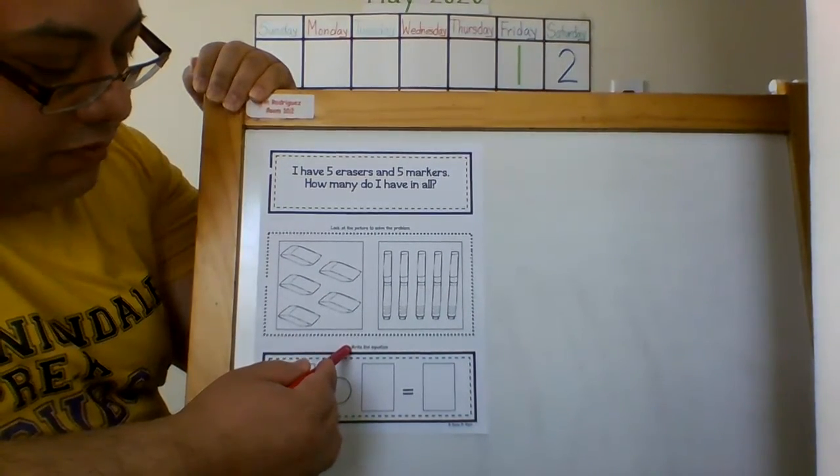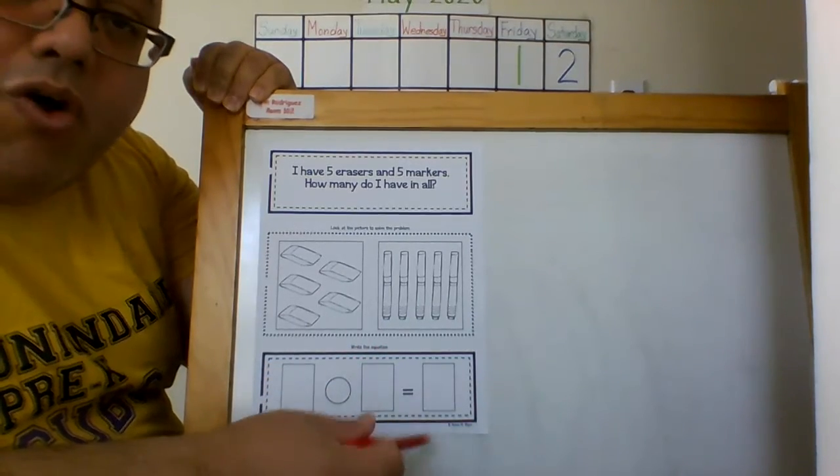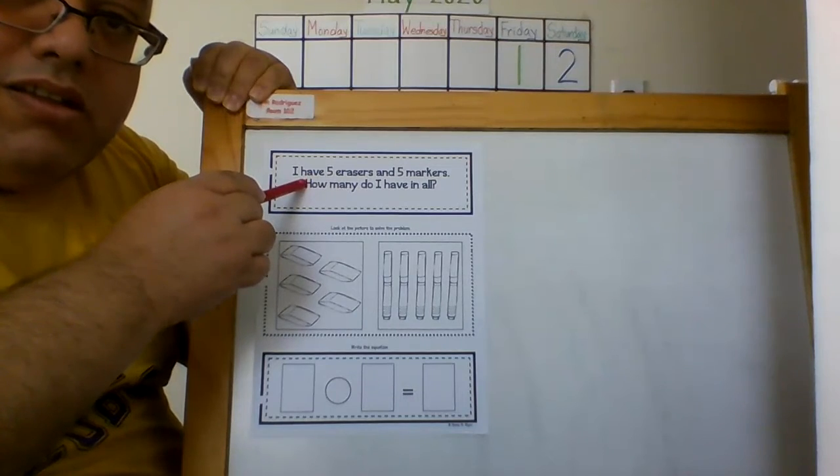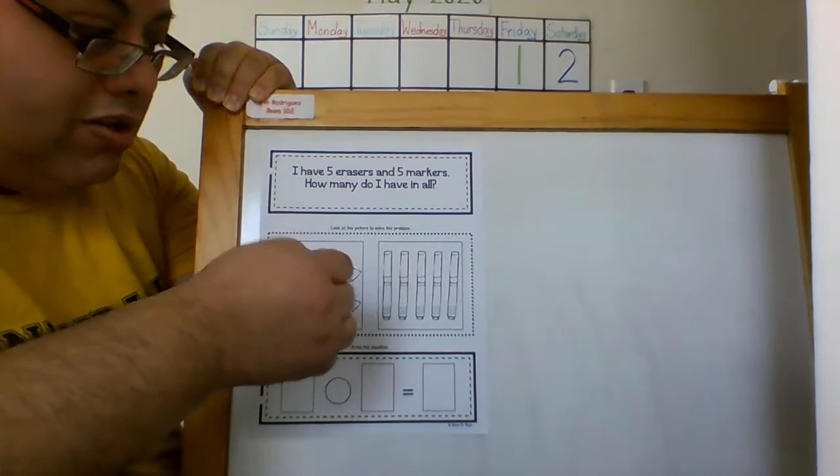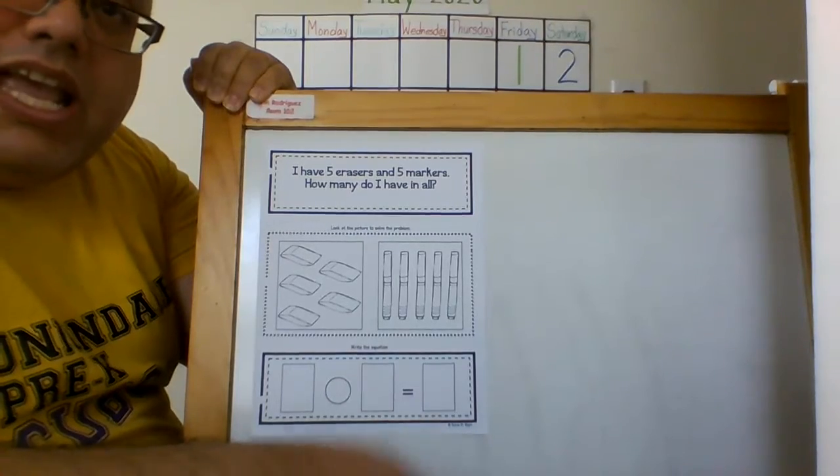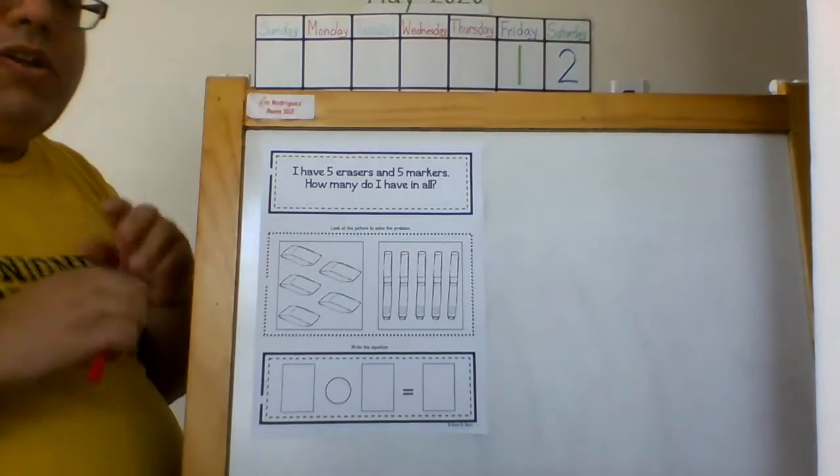Well if I go down, it says write the equation. So the only step that I have to do is read. The next step is look. And the last one is to do the equation. It's very different from the other worksheets that I did give you before. So here we go.